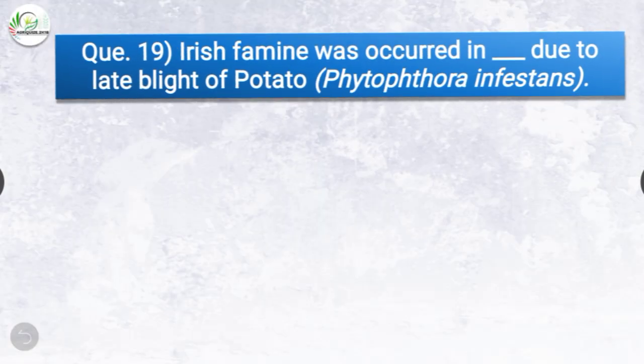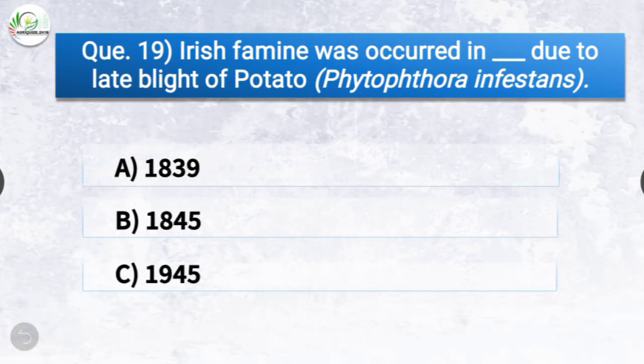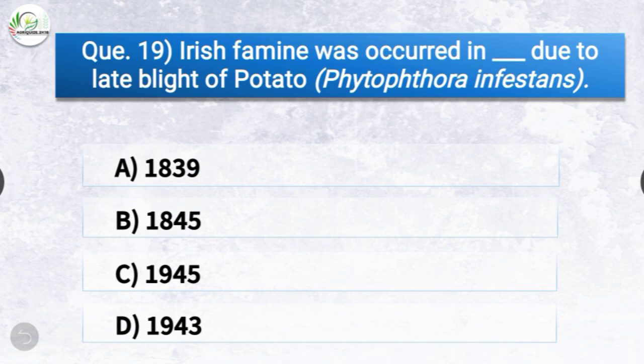Question number nineteen: Irish famine was occurred in dash due to late blight of potato caused by Phytophthora infestans. The options are 1839, 1845, 1945, or 1943. The correct answer is option B, 1845. Irish famine occurred in 1845 due to late blight of potato.